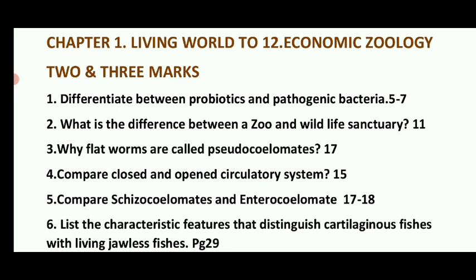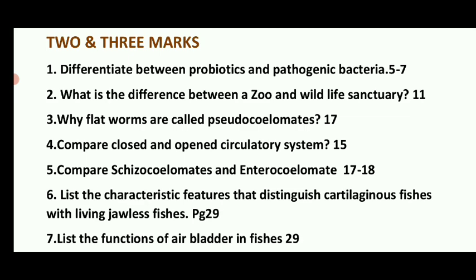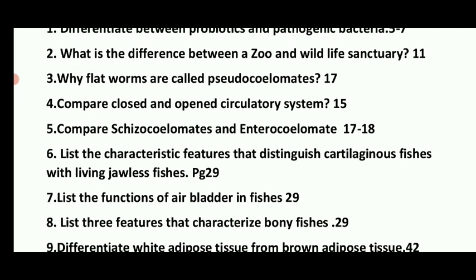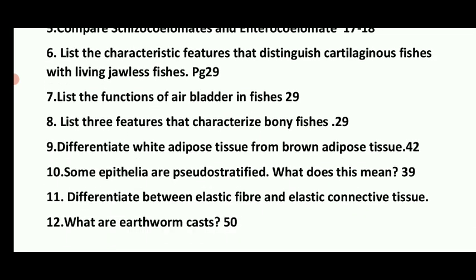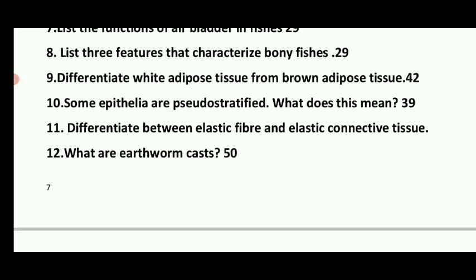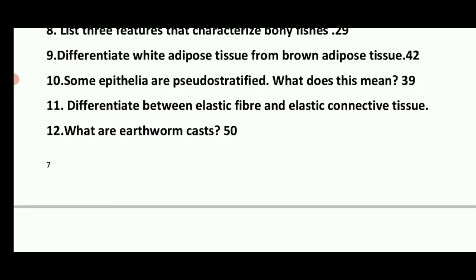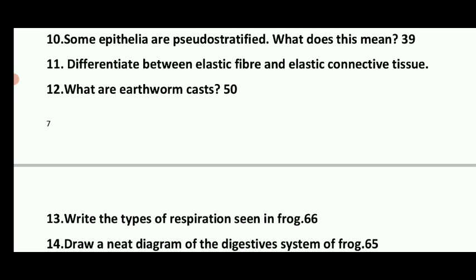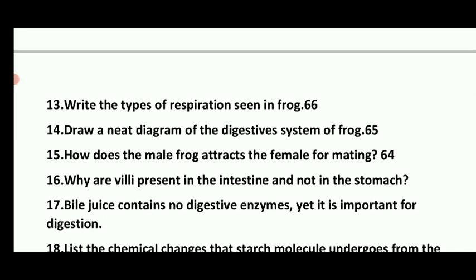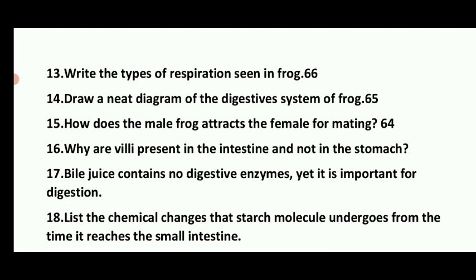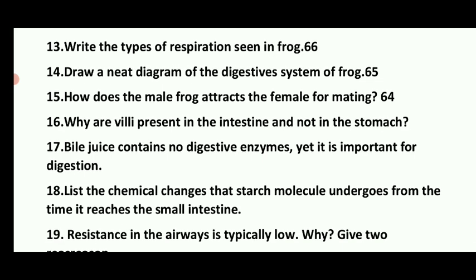For biozoology, 3-mark questions include: the difference between probiotic and pathogenic bacteria, the difference between zoo and White Lake, and compare the closed and open circulatory systems. Also important: the difference between collagen and elastic fiber in elastic connective tissue. Write the types of respiration seen in frog. Draw and label the diagram of the digestive system of frog. How does the male frog attract the female frog during mating?